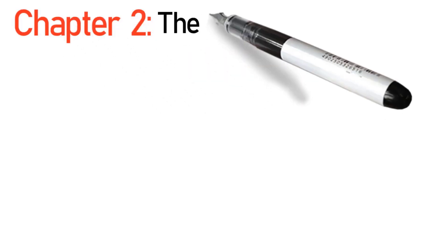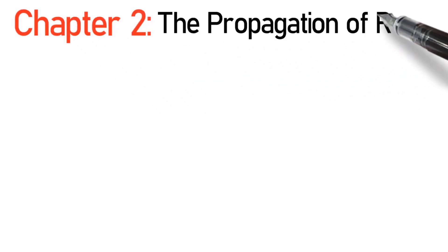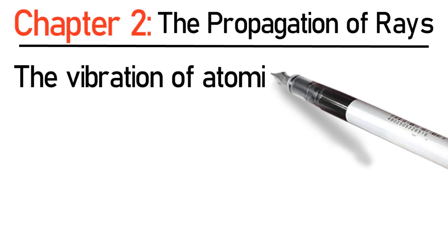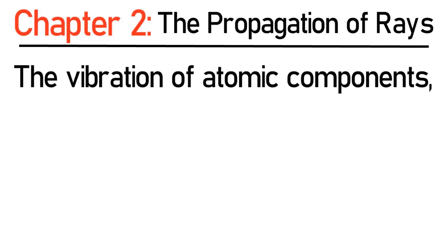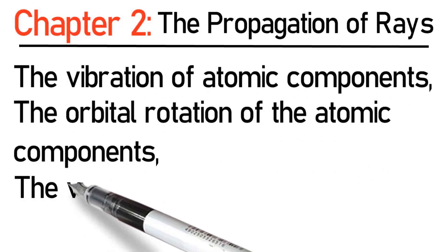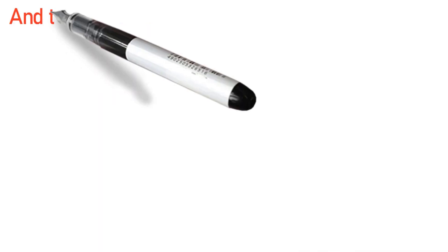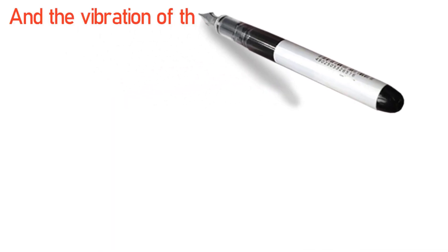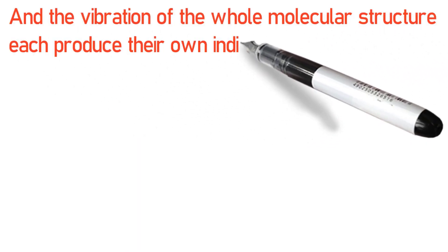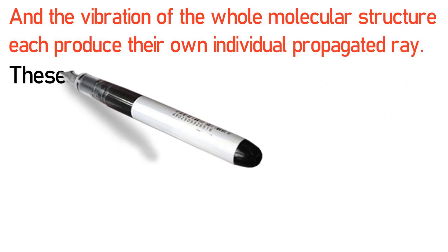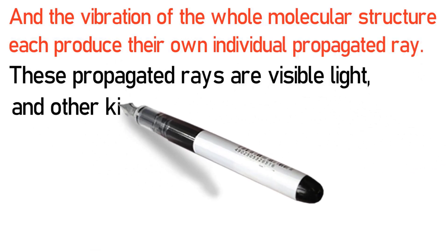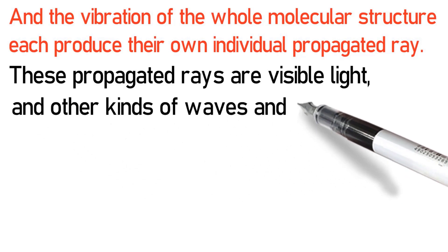Chapter Two: The Propagation of Rays. The vibration of atomic components, the orbital rotation of the atomic components, the vibration of molecules, and the vibration of the whole molecular structure each produce their own individual propagated ray. These propagated rays are visible light and other kinds of waves and rays.